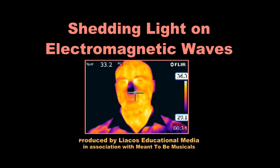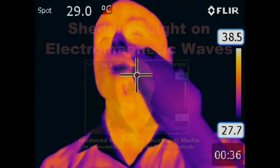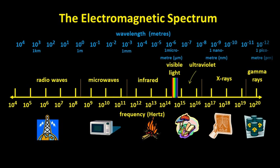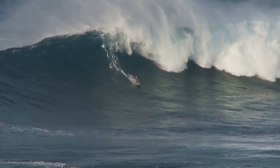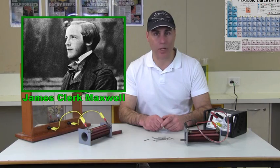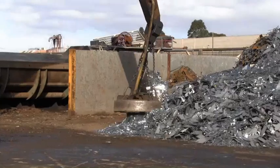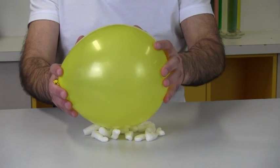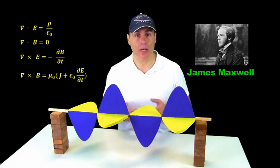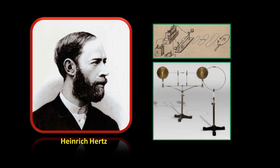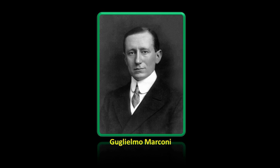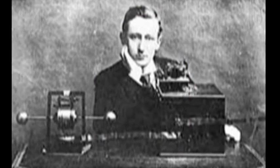Shedding Light on Electromagnetic Waves is the sixth program in the Shedding Light series, aimed at high school students studying the topic of light. The program begins with an introduction to electromagnetic waves, how electricity and magnetism are related, how James Clark Maxwell came up with the idea of an electromagnetic wave, how Heinrich Hertz proved their existence, and how Guglielmo Marconi started using radio waves in long-range communications.